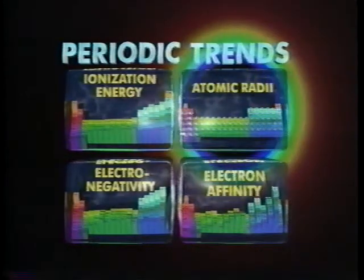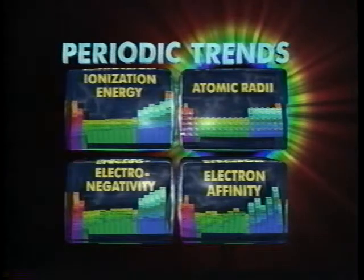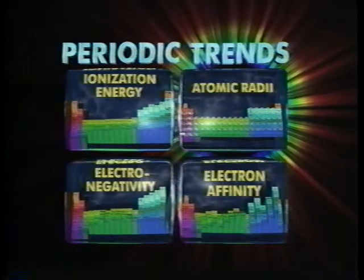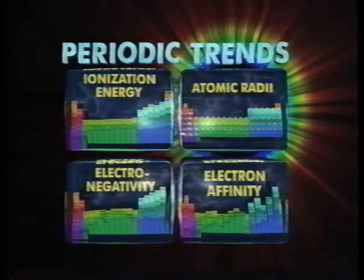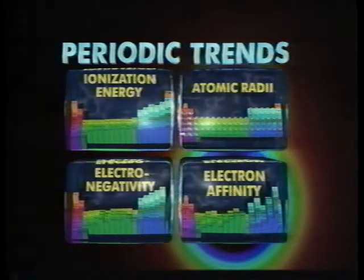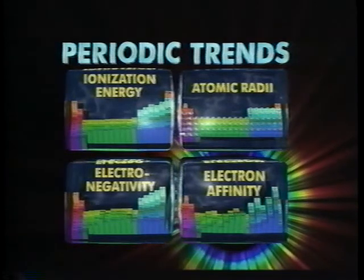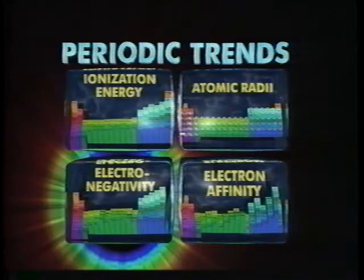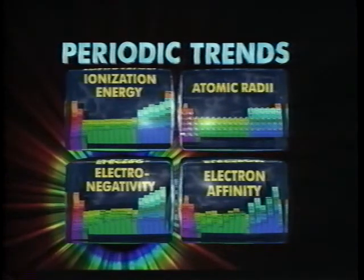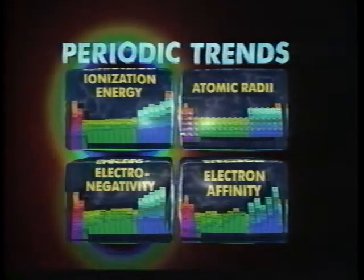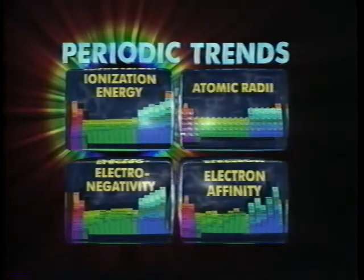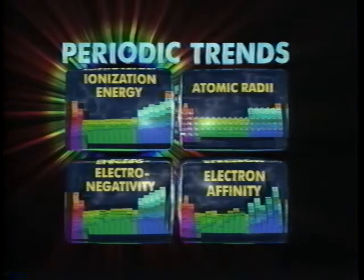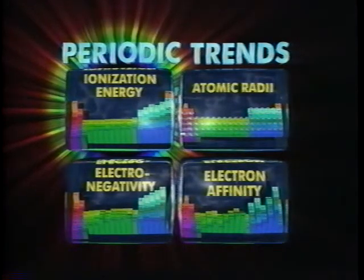In summary, we have seen how the electronic properties of atoms translate into periodic properties of the elements. These periodic properties form a basis for organization of the periodic table and allow us to understand the nature of the chemical bond. Periodic trends in atomic radii, electron affinities, electronegativities, and ionization energies are therefore important fundamental properties of all the elements.